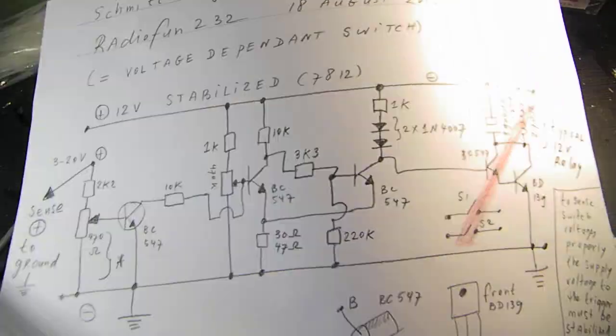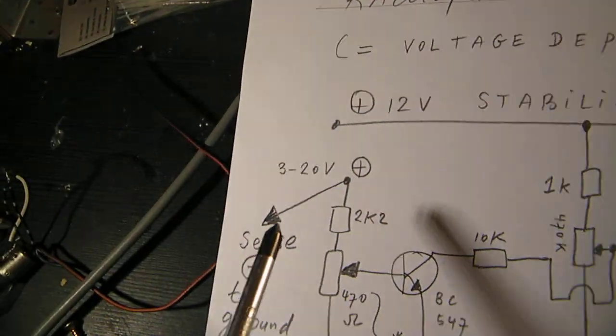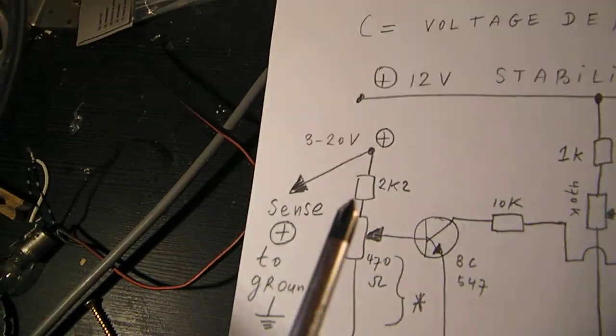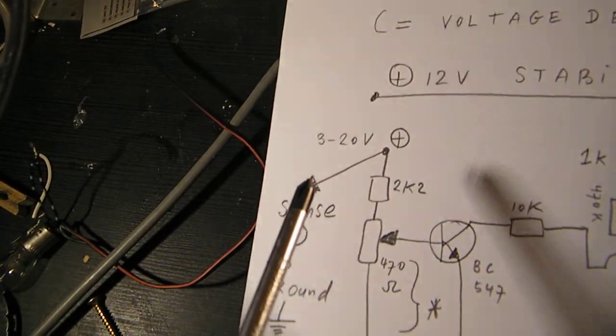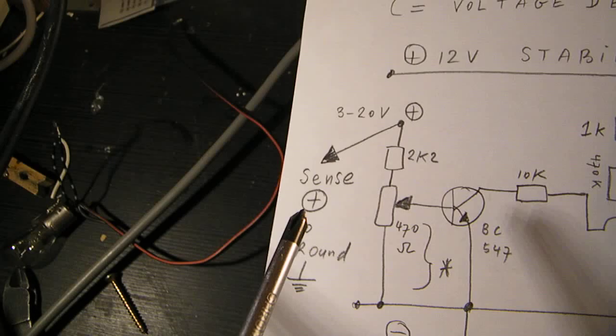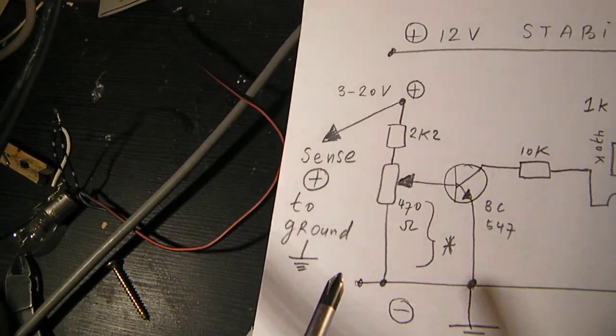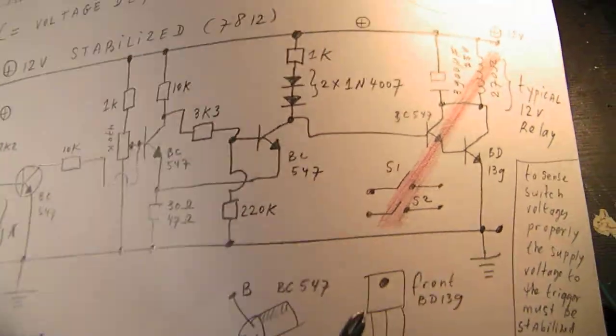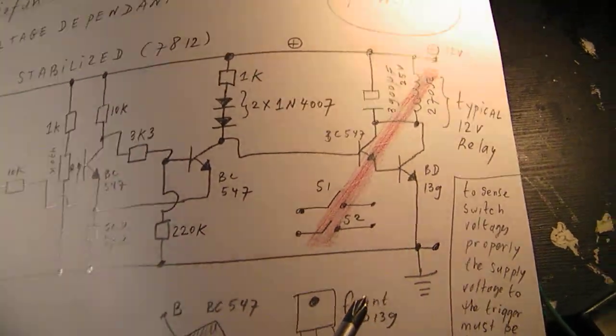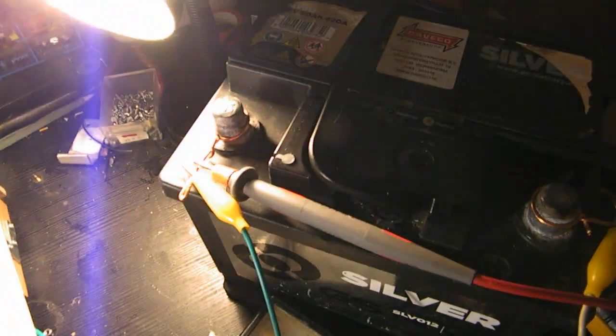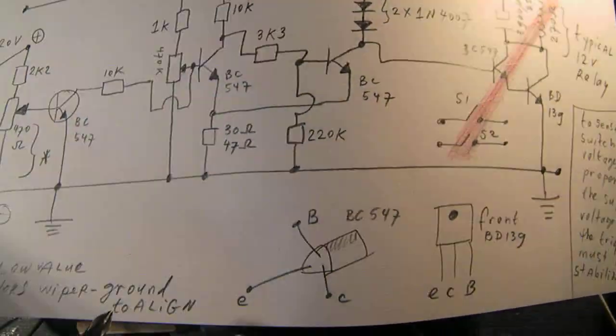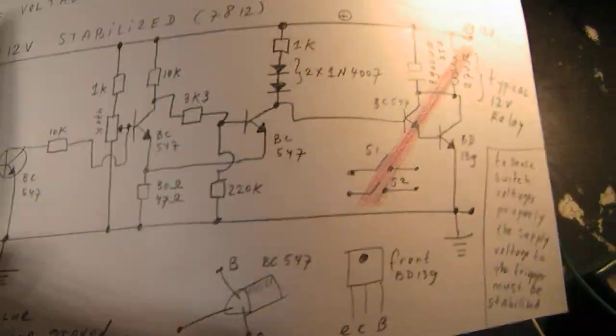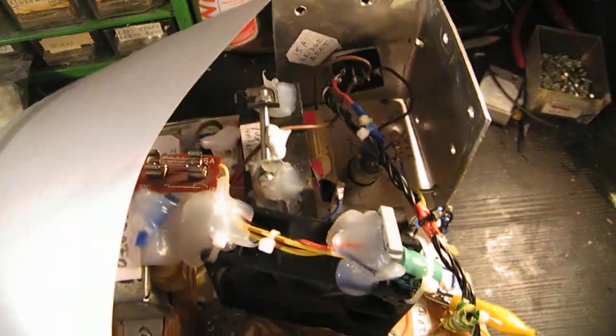When the Schmitt trigger receives a too high voltage, it switches off in this case. And of course in that case the charge current to that battery is switched off, that's normal. Here you see the circuit that I'm working on.